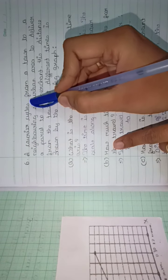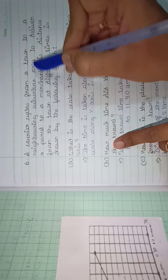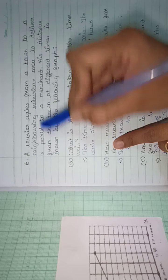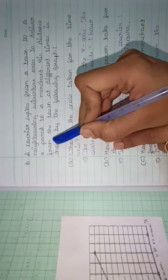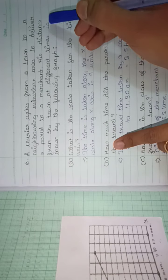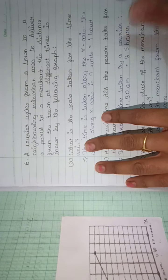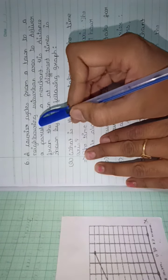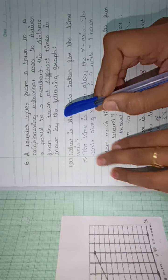Question 6. A courier cycles from a town to a neighboring suburban area to deliver a parcel to a merchant. His distance from the town at different times is shown by the following graph. So, the graph is given to us and a courier has been parceled from one location to the other, to the merchant. That is being shown in the graph.